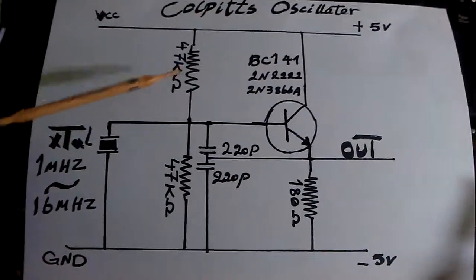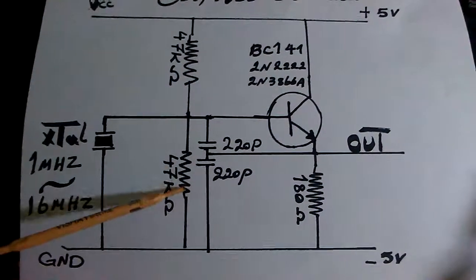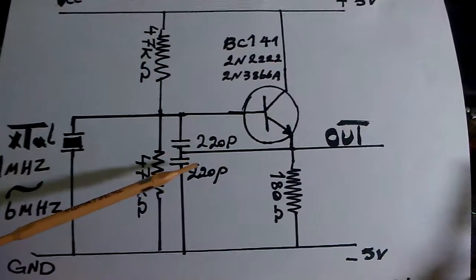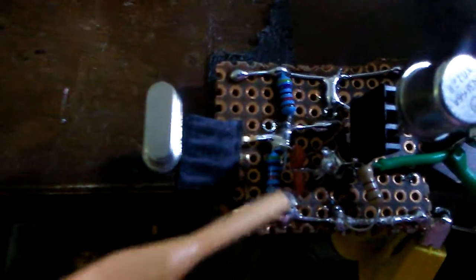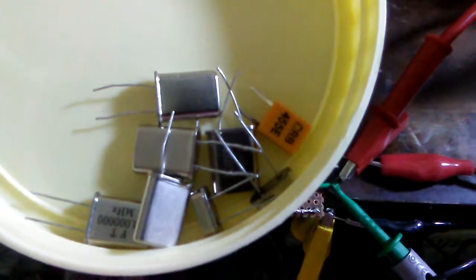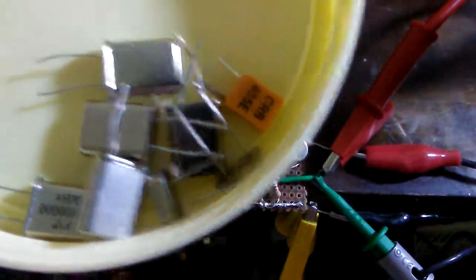For the voltage divider here, I use 47 kilohm resistors, and for the caps I used 220 picofarad capacitors. I tried the project with several crystal oscillators and the result is pretty good.